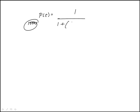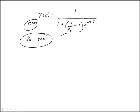1 over 1 plus 1 over P sub 0 minus 1 times e to the power of minus rt, where this is the population at time equal to 0, and r is the growth rate of the population. They tell us that P of 1 is 5.